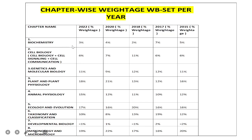Looking at the 2022 weightage: in biochemistry, 3% of questions were asked. In cell biology — which includes cell signaling and cell communication — 6% were asked. In genetics and molecular biology, 11% were asked. In plant and plant physiology, which includes all plant-related portions, 18% of questions were asked in 2022.